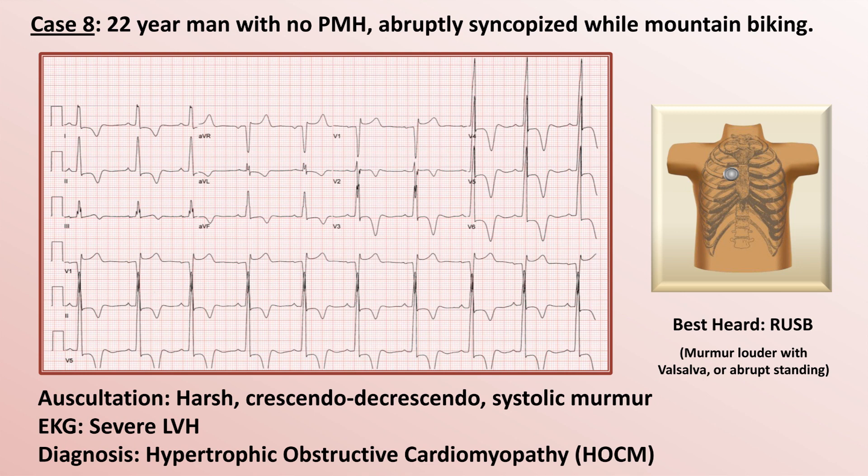Hypertrophic obstructive cardiomyopathy is a genetic disease of the myocardium which results in severe thickening of portions of the LV without obvious cause. It is best known as a leading cause of sudden death in young athletes during competition, including Cameroonian football player Marc-Vivien Foé and American college basketball star Hank Gathers.